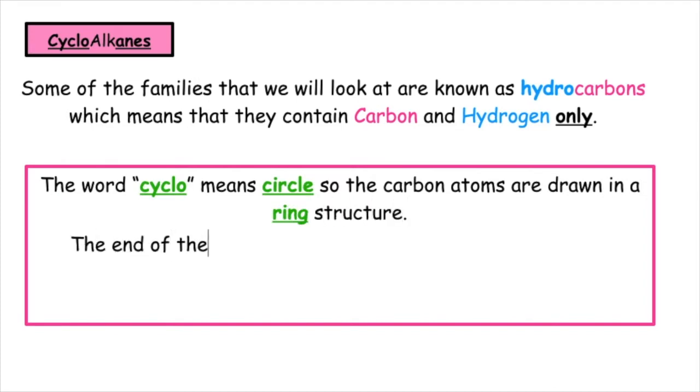The end of the name ane means that this family has carbon to carbon single bonds. This is known as saturated.